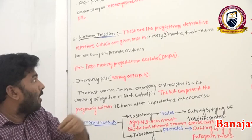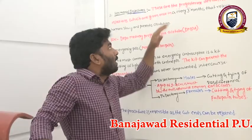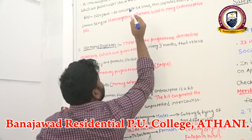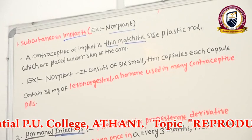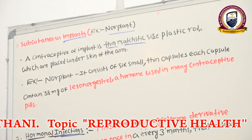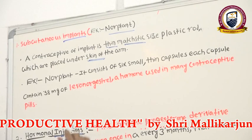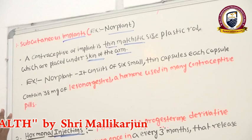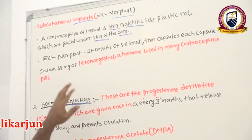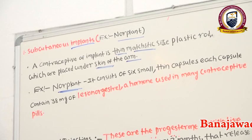Contraceptive implants are thin matchstick-sized plastic rods placed under the skin of the arm to slowly release drug and prevent pregnancy. They are placed especially at the region of the arm.